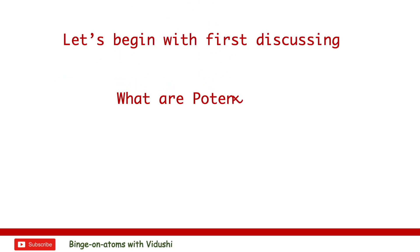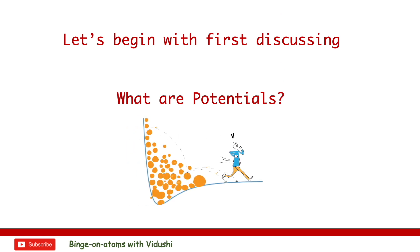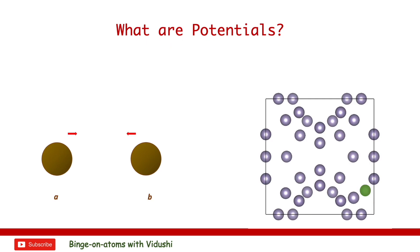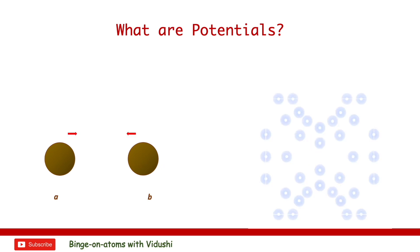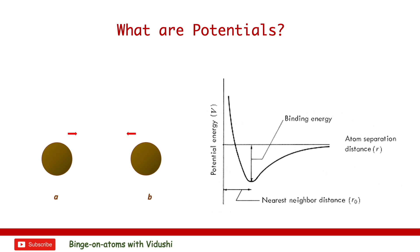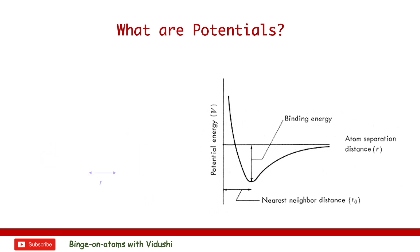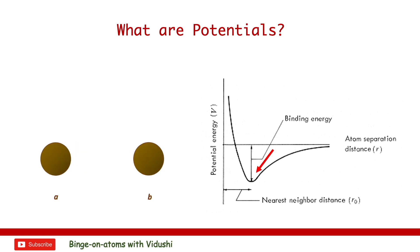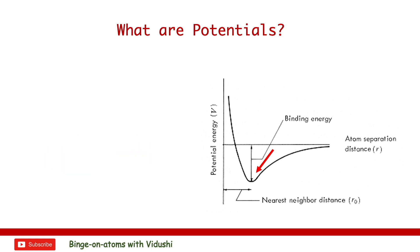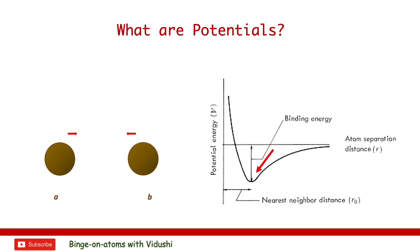Let's begin with first discussing what are potentials. Potentials are interatomic potentials that describe the interaction between a pair of atoms or the interaction of an atom with a group of atoms in a condensed phase. Potentials must have both attractive and repulsive components. This plot here shows potential energy as a function of lattice spacing between two atoms in a solid. Each atom in the ideal crystalline solid experiences the same potential due to the other atoms in the material.